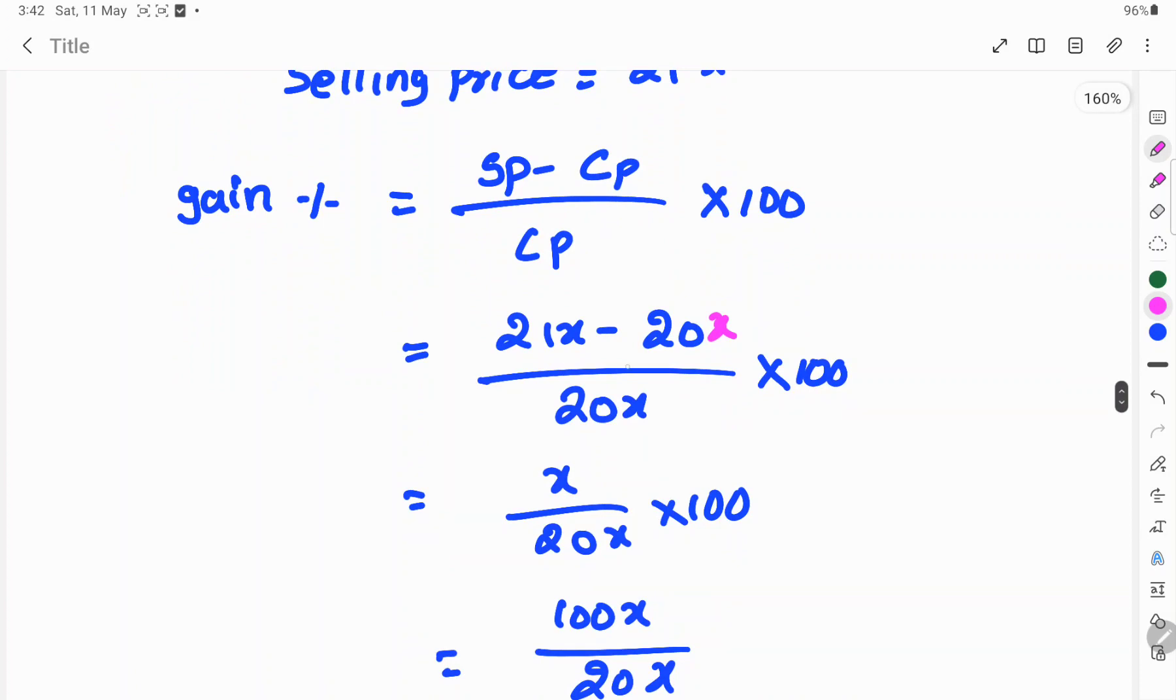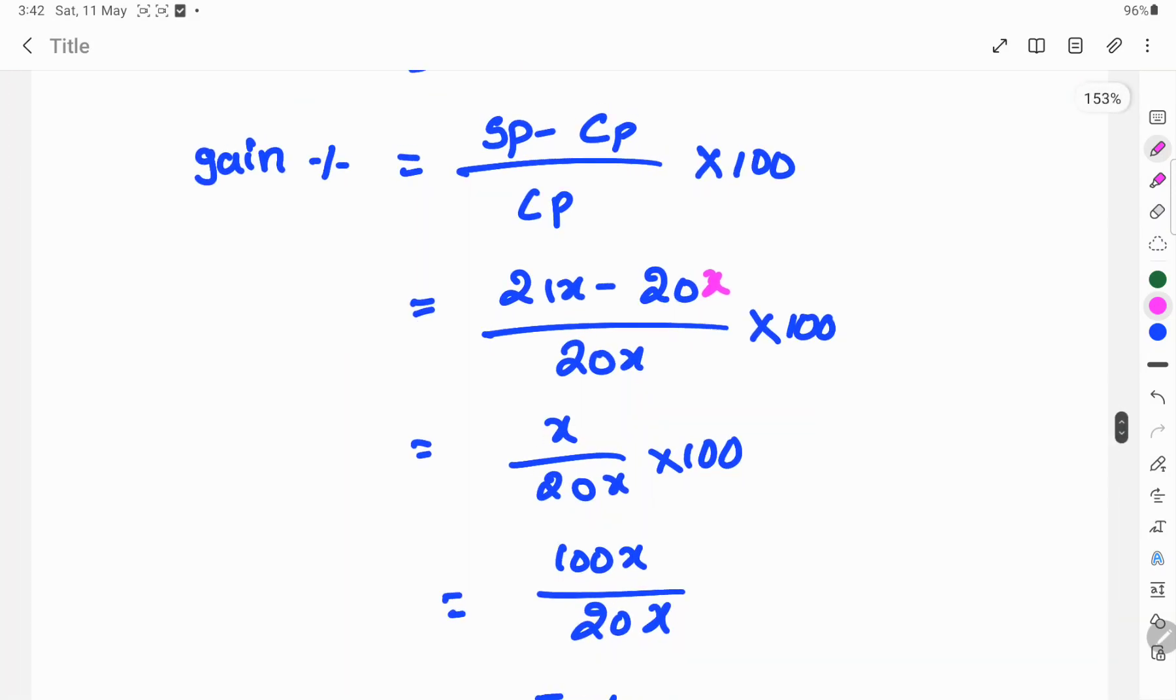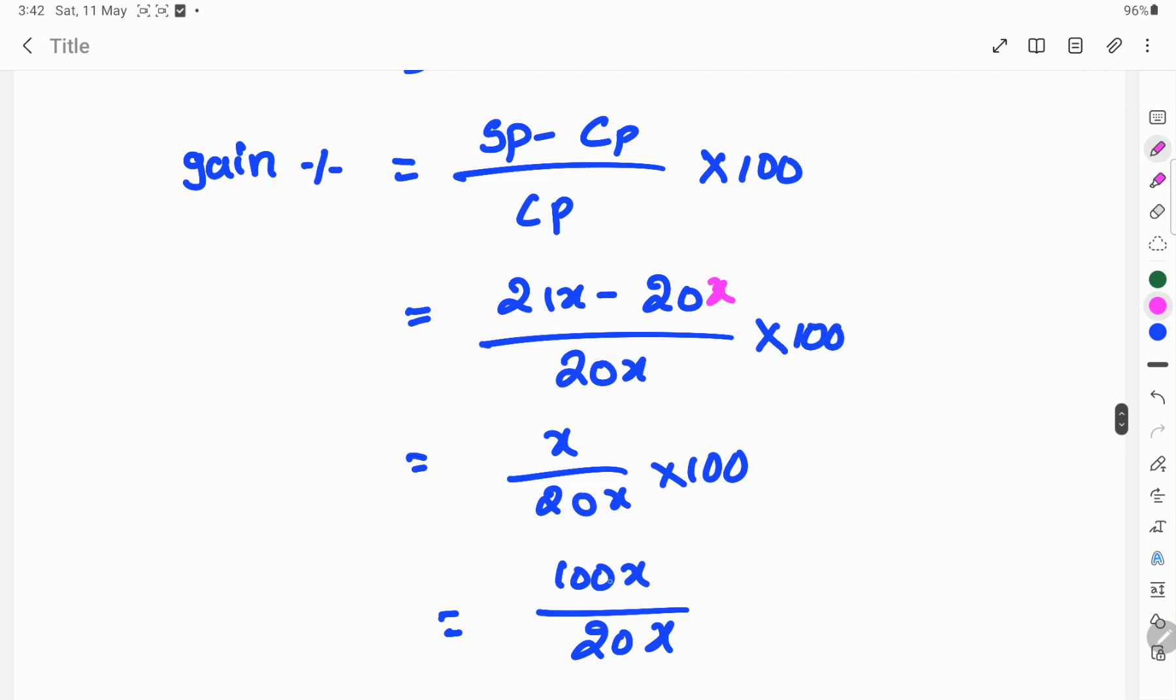So, here 21x minus 20x is x by 20x into 100. Here x over x will cancel. 100 into x is 100x by 20x.